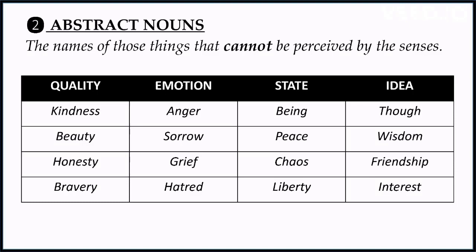States of being like peace or chaos are also abstract — peace is a very peaceful state, chaos is a state of total trouble. We can only think about them. Ideas like friendship, wisdom, and interest are also abstract nouns. Abstract nouns are those which we cannot perceive by our senses.